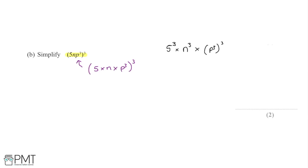Similarly to the previous part, we have p to the power of 3 being raised to the power of 3. This requires knowledge of index laws again. If we have x to the power of a raised to the power of b, this gives us x raised to the power of a multiplied by b. So when we have p to the 3 to the 3, we do p to the power of 3 multiplied by 3, giving us p to the power of 9. So we have 5 to the power of 3, multiplied by n cubed, multiplied by p to the power of 9.